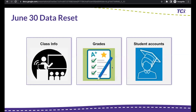So what happens in our June 30 reset? The main thing is we delete all classes in your TCI account. With that, we delete all student accounts and all of their grades — everything is pretty much wiped other than teacher accounts, but teachers do have their programs removed when we delete those classes. If you have teachers using TCI over the summer for summer school, they will want to export student grades on June 29th so they have them before the data reset, because it will be a clean slate on July 1st.